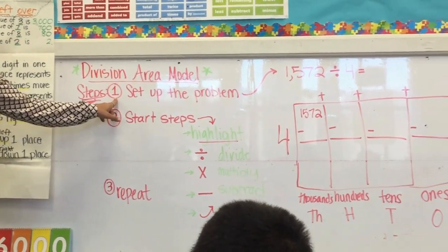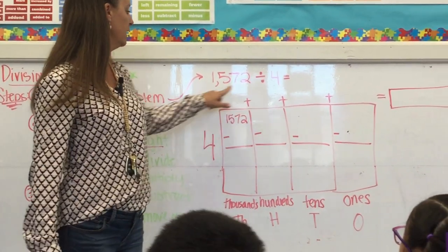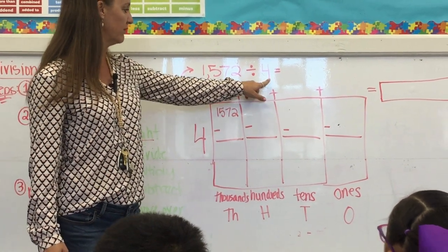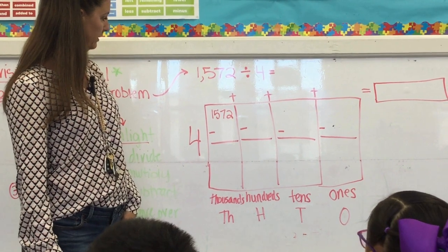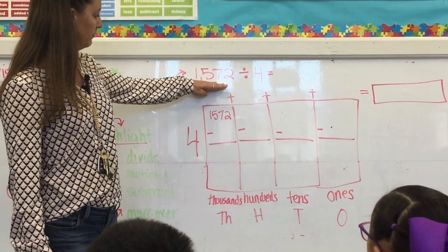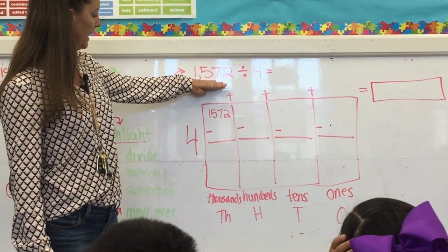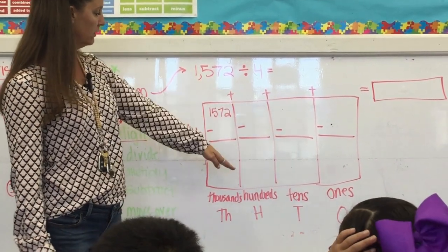What are we gonna do? Yes, set up the problem. So if we follow it over here, okay, so if we have like 1572 divided by 4, this would be how we set up our problem. Right, we take the dividend, we see how many digits it has, and then we make the boxes accordingly.